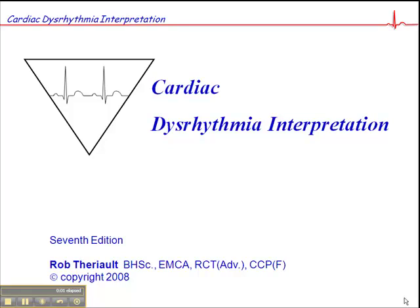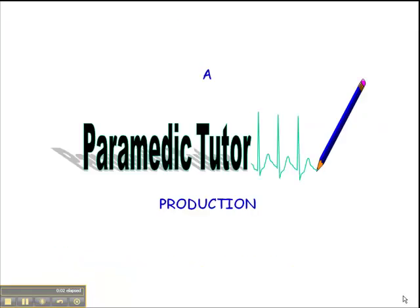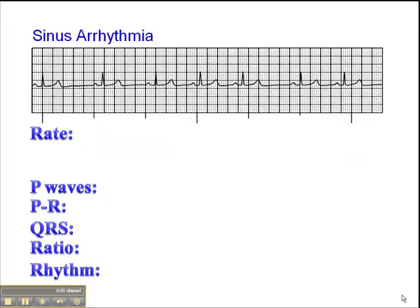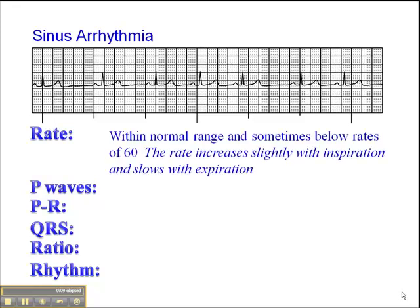This next rhythm is on page 50 of the Cardiac Dysrhythmia Interpretation Workbook. This is a sinus arrhythmia, a rhythm in which the heart rate varies with the respiratory pattern.